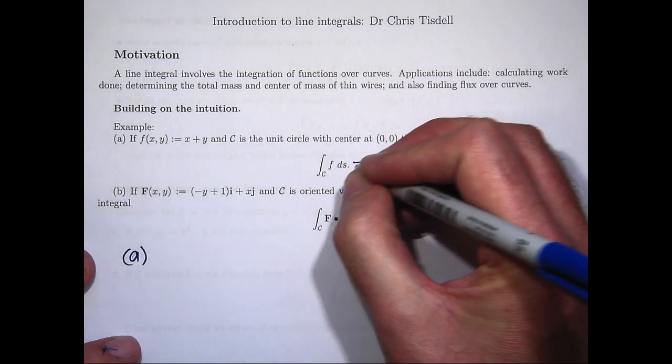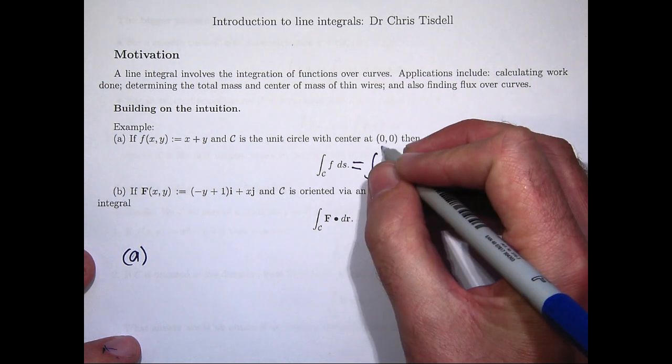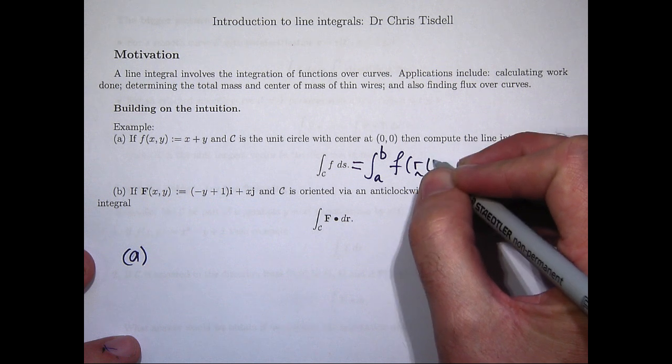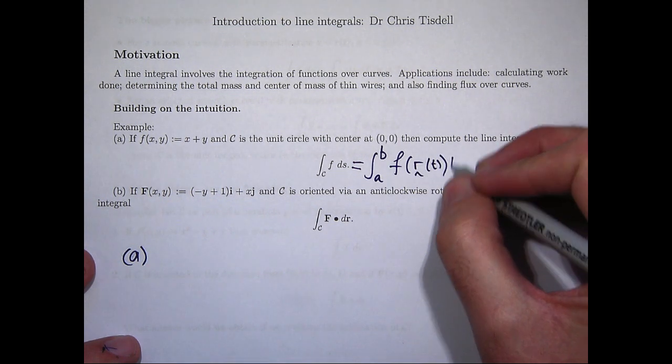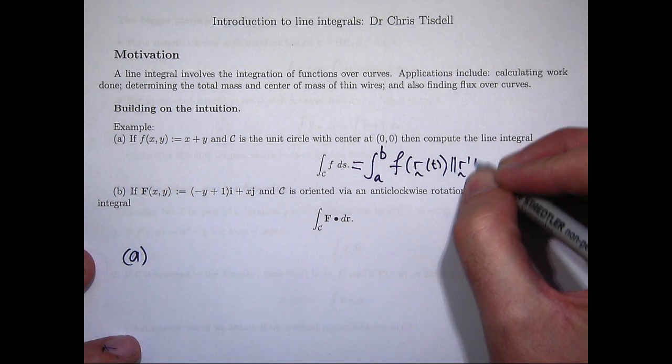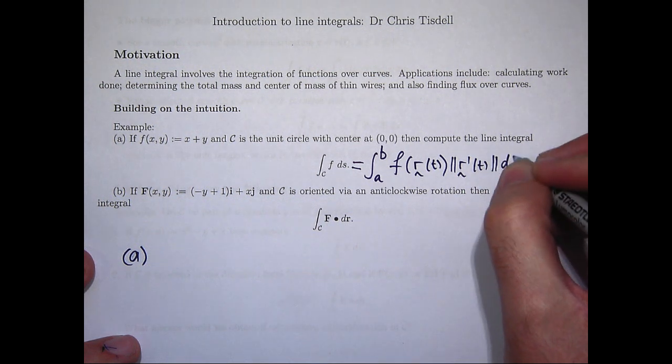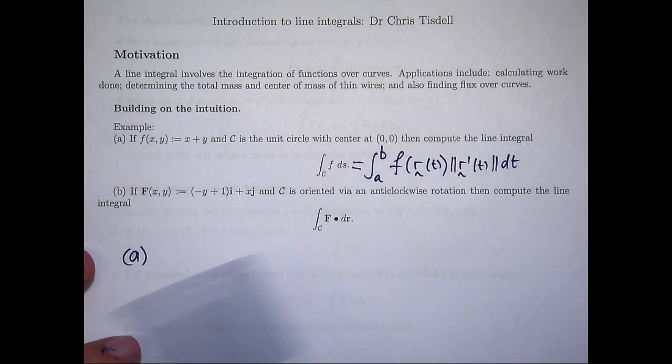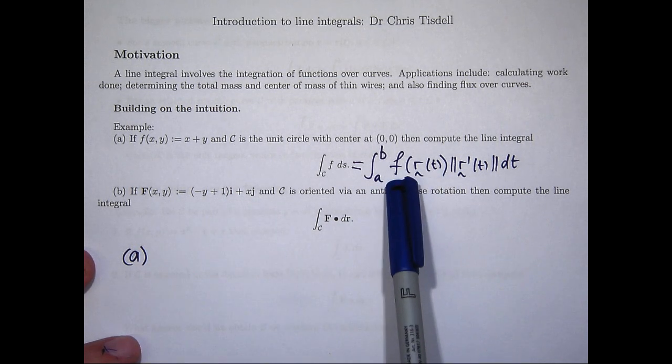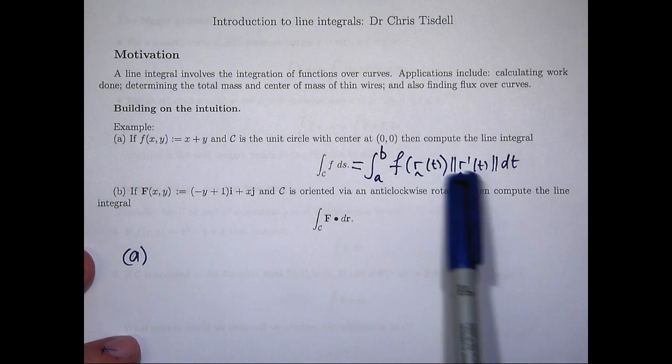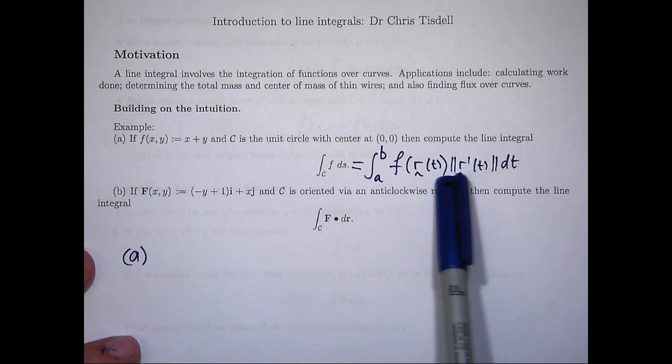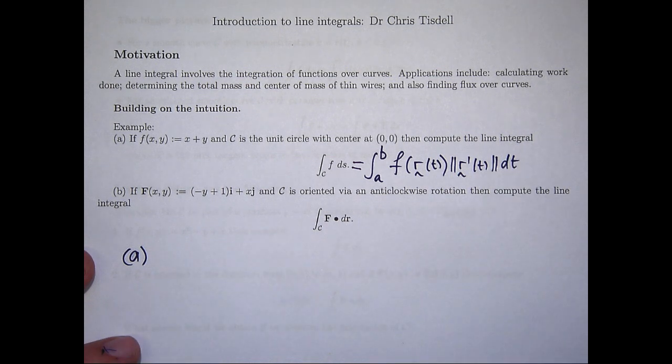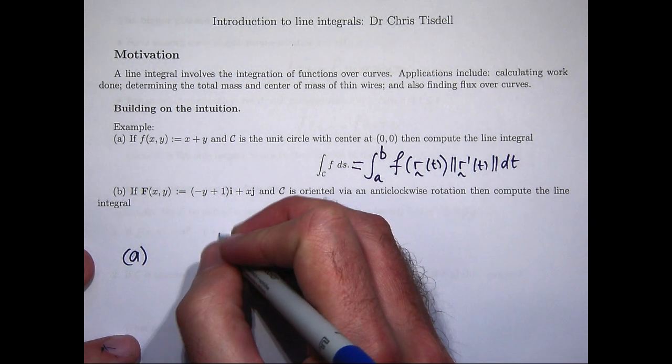Now, from a computational point of view, this is how we mostly evaluate a line integral. We introduce a vector function of one variable, R of t. We evaluate F along that and multiply through by this magnitude of this derivative, dt. So, let me put that into some context for you.